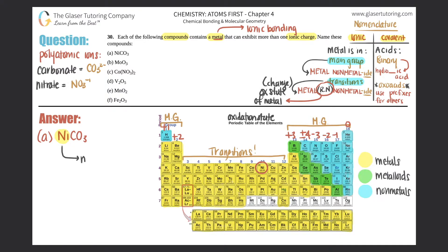So here we have nickel. Now this is a little tricky because I see carbon and oxygen together — I can't just say carbide oxide. When you have more than one element grouped together, it's always going to be a polyatomic ion, and you should memorize your polyatomics. Carbonate is CO₃²⁻. You'd only be able to spot that if you've memorized your polyatomics — use flashcards or write them down, whatever works for you. So CO₃ here is carbonate, making this nickel carbonate.